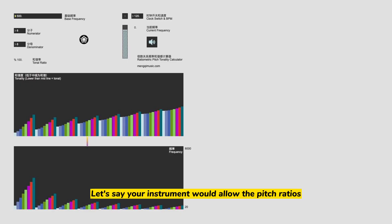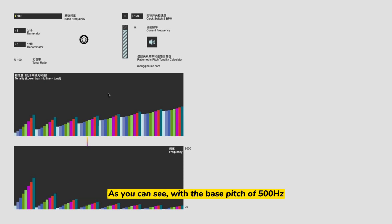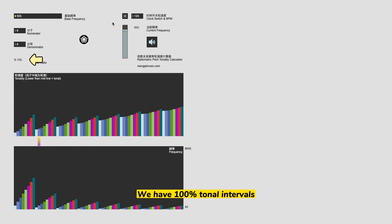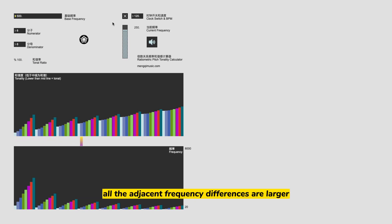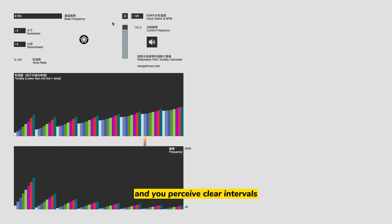Let's say your instrument would allow pitch ratios with numerator and denominator from 1 to 8. As you can see, with a bass pitch of 500 Hz, we have 100% tonal intervals. This means all the adjacent frequency differences are larger than the critical bandwidth, and you perceive clear intervals.